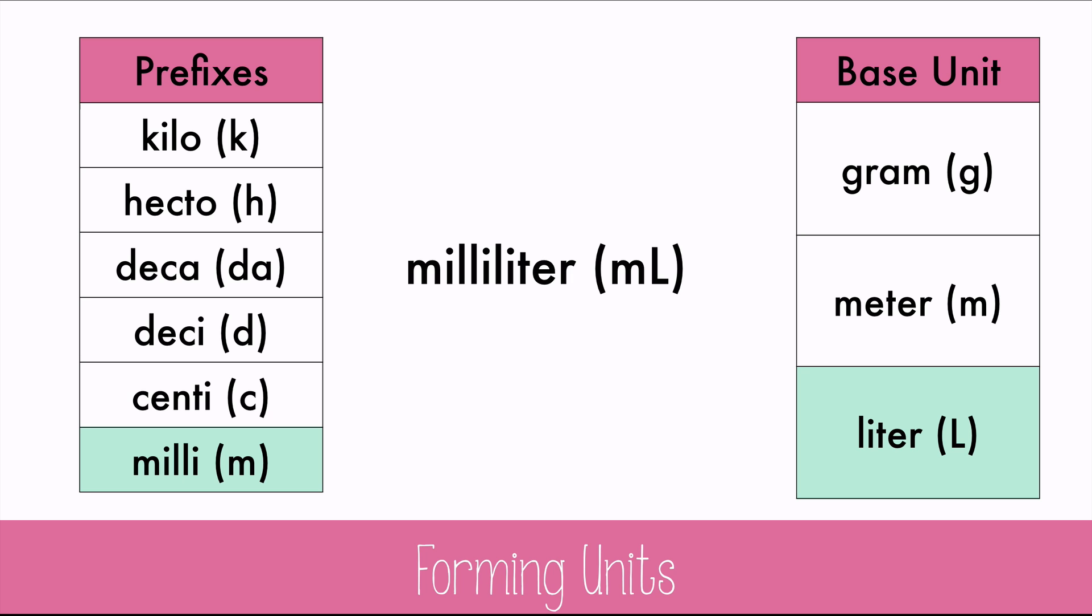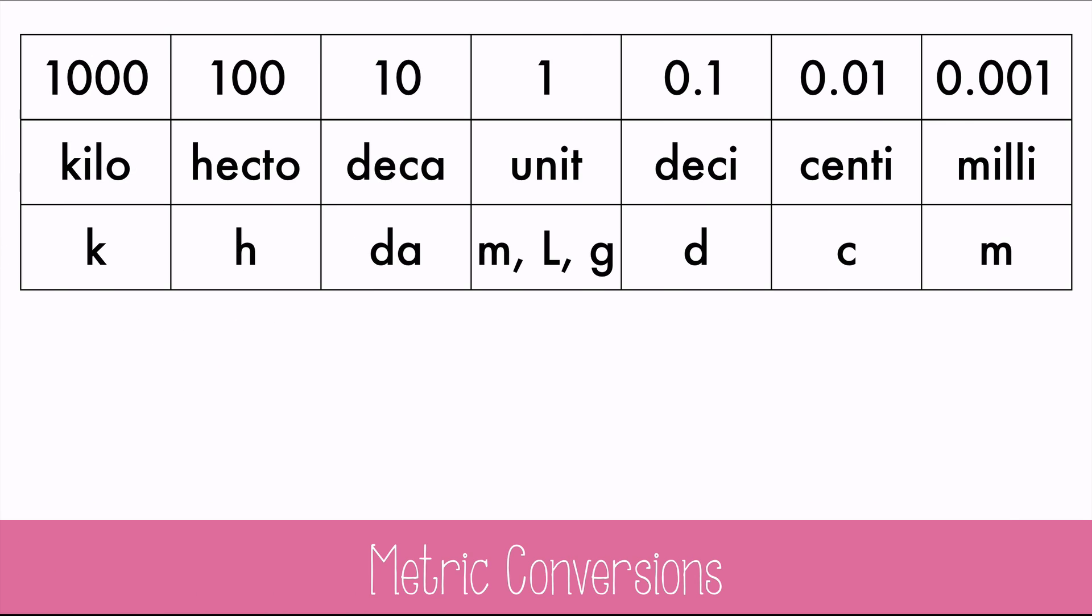There's one other really great thing about the metric system, and that's how easy it is to convert from one type of measurement to another. When you write the units out in order of largest to smallest, the conversions can be very easy. Remember that the smaller values are on the right, and the larger values are on the left.